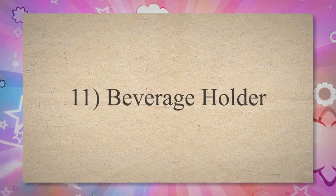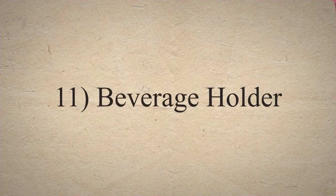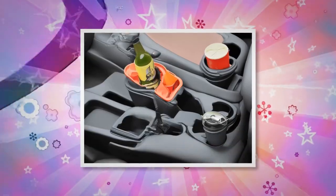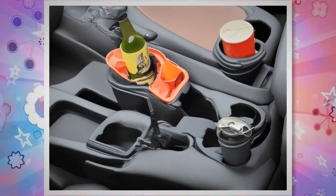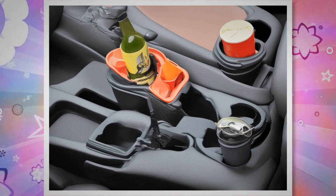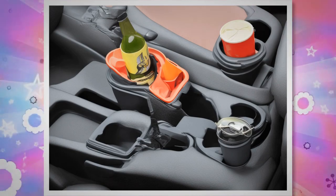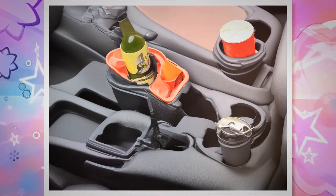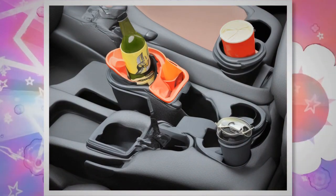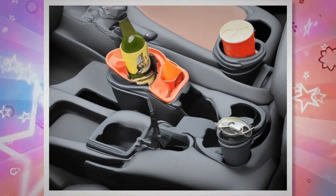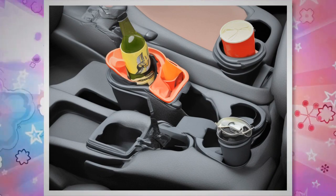11. Beverage Holder. The beverage holder is used as a restaurant table or cup holder in the car during the journey. It has high durability, sustainability, and easy operation. It is most commonly used to hold things you want to store, such as food and beverages.